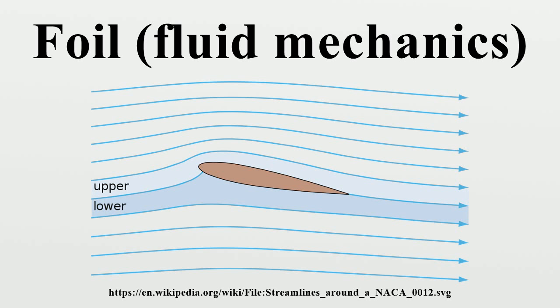Physics of foils: A foil generates lift primarily as a result of its shape and angle of attack. When oriented at a suitable angle, the foil deflects the oncoming fluid, resulting in a force on the foil in the direction opposite to the deflection.